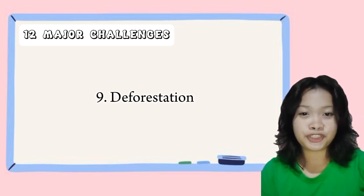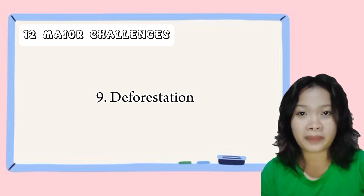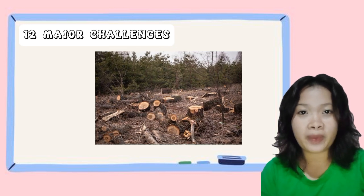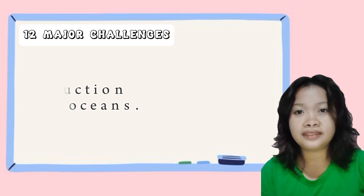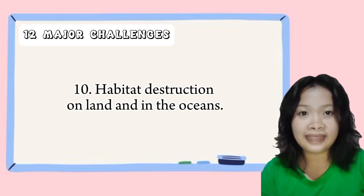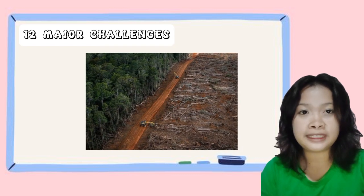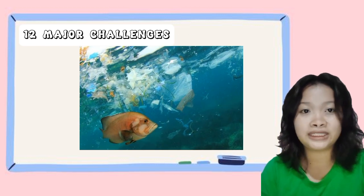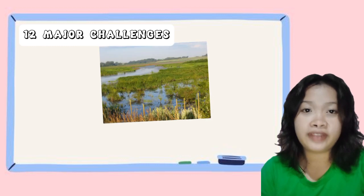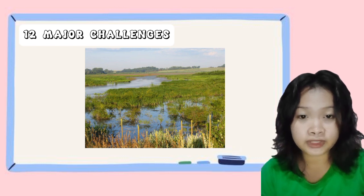Next is deforestation. Deforestation can lead to loss of habitat for wildlife, soil erosion, and changes in local weather patterns. Deforestation is caused by clearing forests for agriculture or logging. Next is habitat destruction. Habitat destruction on land and in the oceans can lead to loss of biodiversity and harm ecosystems. Habitat destruction is caused by human activities such as development or agriculture that alter or destroy natural habitats. For example, draining of wetlands for development can lead to loss of biodiversity.